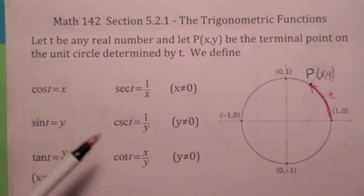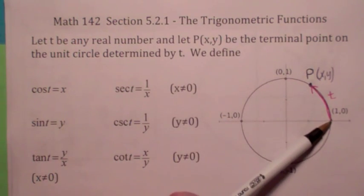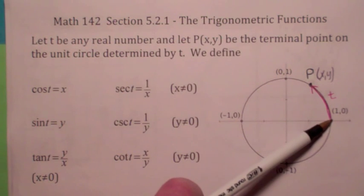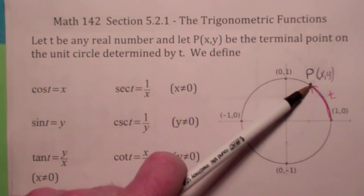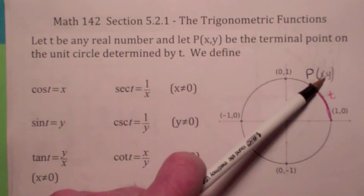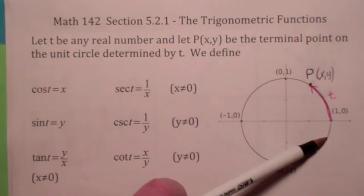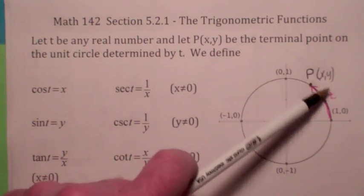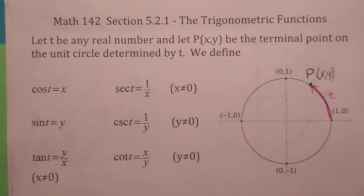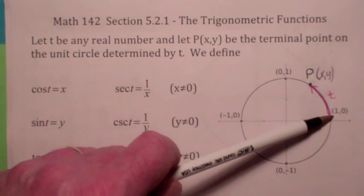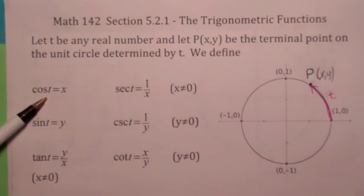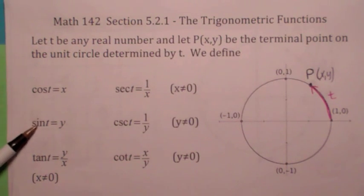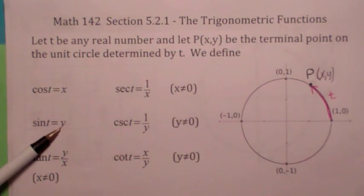Remember how we define the point on the unit circle? We always start at (1, 0). Think of t as a real number. If t is a positive real number, we move counterclockwise, and this point where we end up, we're calling it P. If you move a positive distance t along the unit circle, the x-coordinate will be defined to be the cosine of t, and the y-coordinate will be defined to be the sine of t.